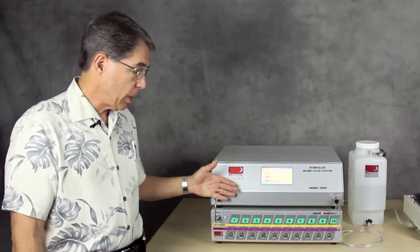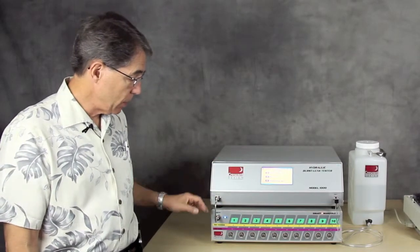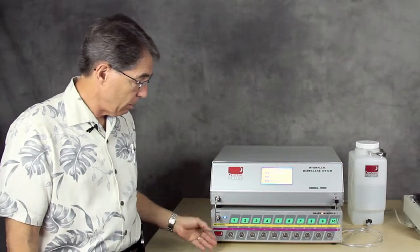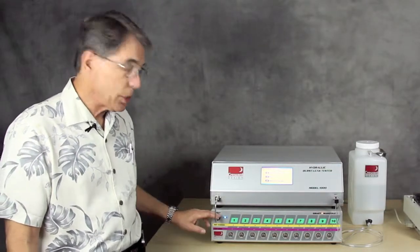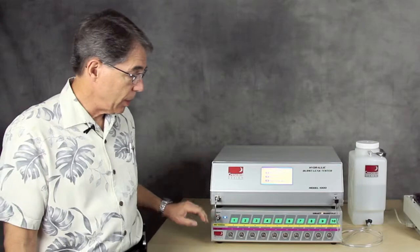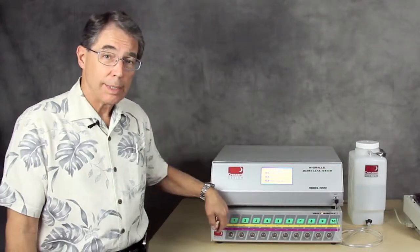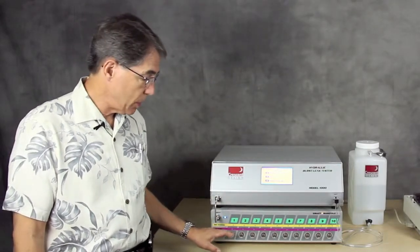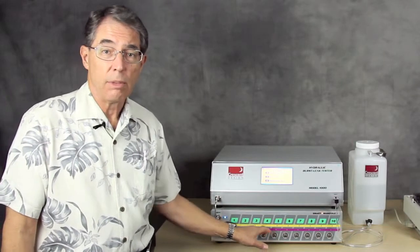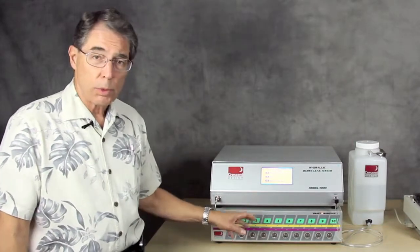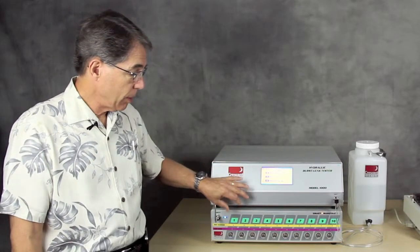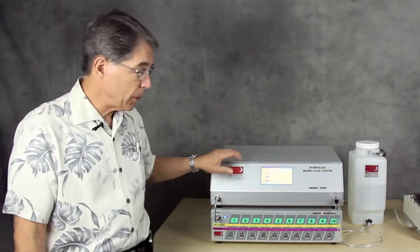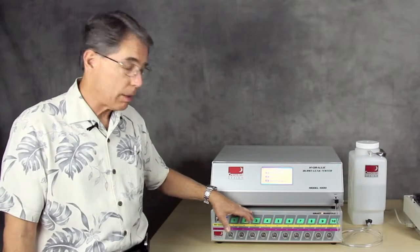So what is the smart manifold? Well the smart manifold is a unit that sits underneath the HBLT and takes pressure from the HBLT and distributes it amongst 10 ports. These ports can be selected individually or in groups or all together, and it's connected to the HBLT. So the HBLT is actually controlling the smart manifold.